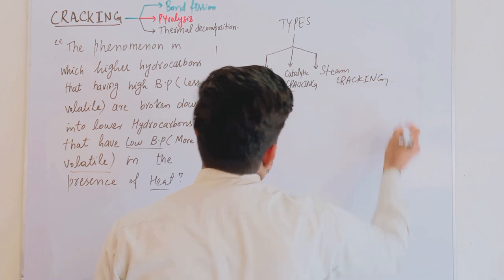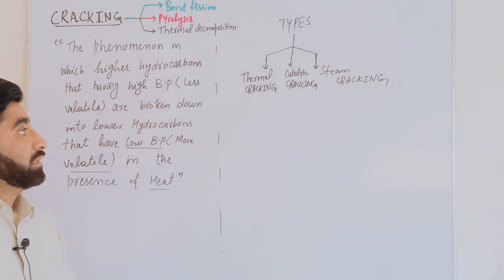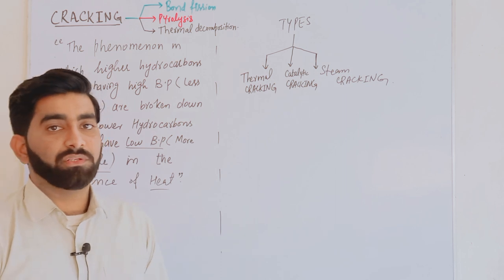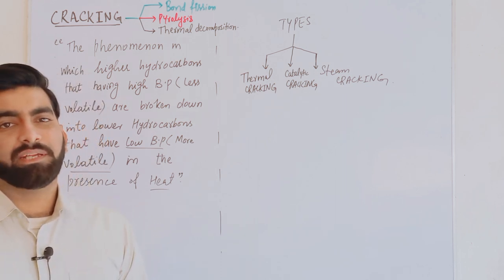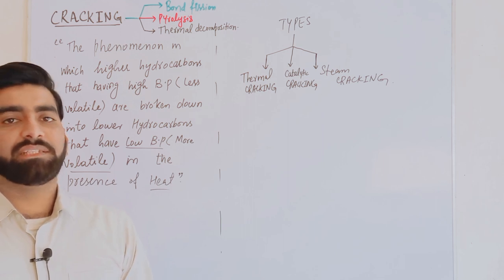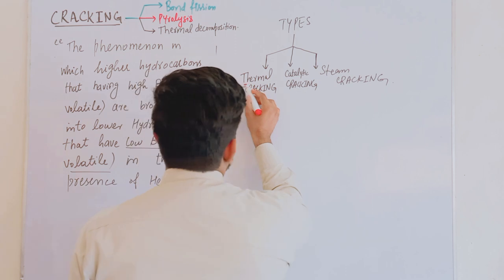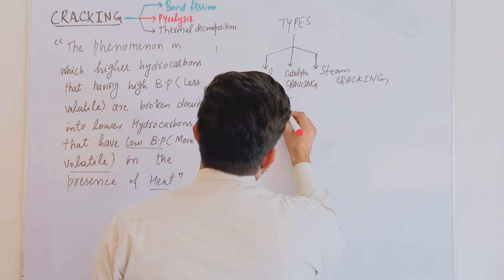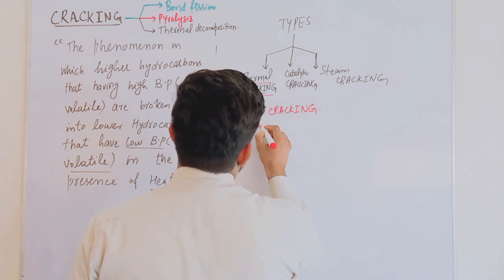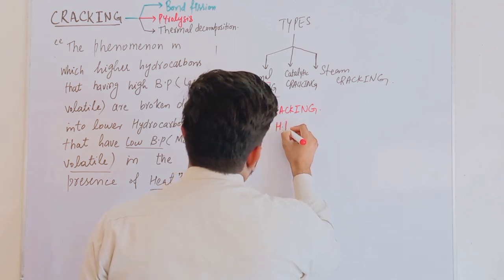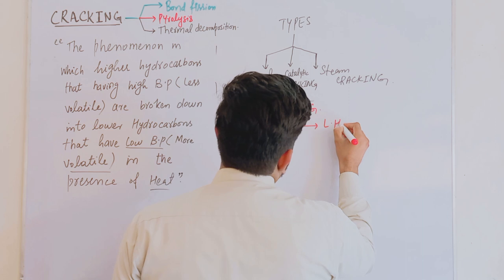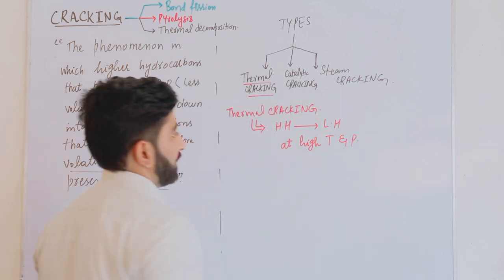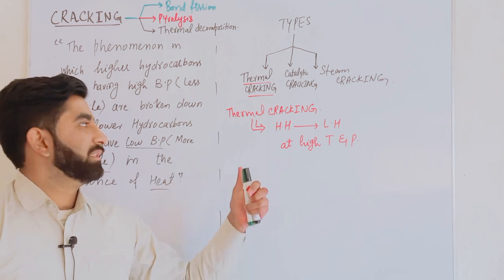We will discuss all types of cracking one by one. Thermal cracking is defined as the type of cracking in which higher hydrocarbons are broken down into lower hydrocarbons at a temperature of about 700°C and at high pressure.